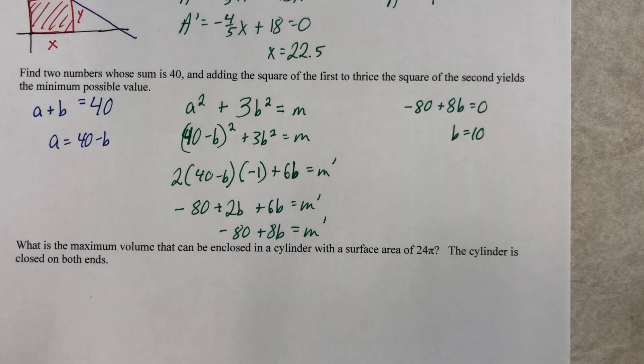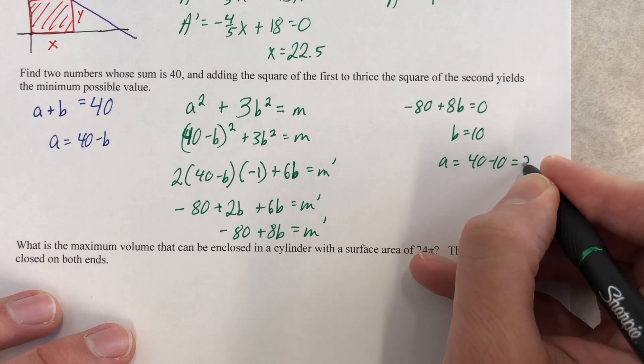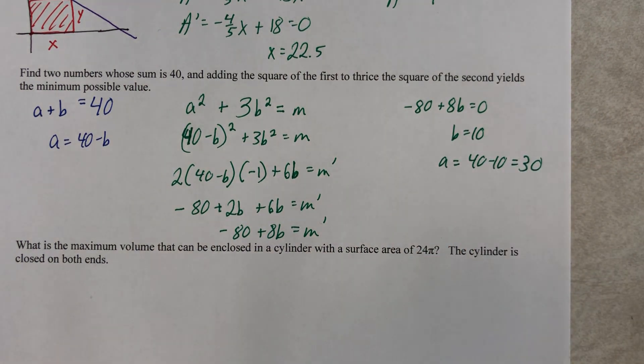All right. Well, that's fantastic. If B is 10, final answer, find two numbers. There's one of them. Here's the other one. 40 minus 10. Go ahead and put 30, but I wanted to show you where it came from. That's it.